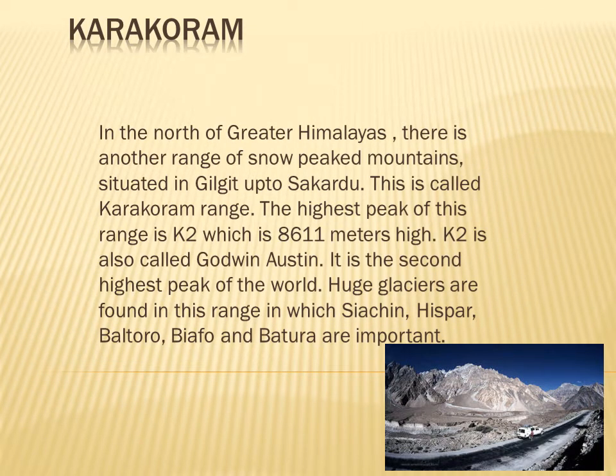Karakram: In the north of Greater Himalayas, there is another range of snow-peaked mountains situated from Gilgit up to Skardu - this is called the Karakram Range. Its highest peak K2, also called Godwin Austen, has a height of 8611 meters and is the second highest peak of the world. Huge glaciers are found in this range; Siachen, Hispur, Baltoro, Biafo and Batura are important.